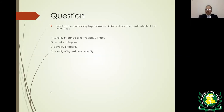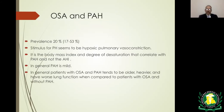Question: the incidence of pulmonary hypertension in obstructive sleep apnea best correlates with which of the following — severity of apnea-hypopnea index, severity of hypoxia, severity of obesity, or severity of hypoxia and obesity? The prevalence of pulmonary hypertension in sleep apnea is about 20 percent. The stimulus is hypoxia, as it leads to vasoconstriction in the pulmonary circulation. It is body mass index and degree of desaturation — not severity of AHI — that correlate with pulmonary hypertension.